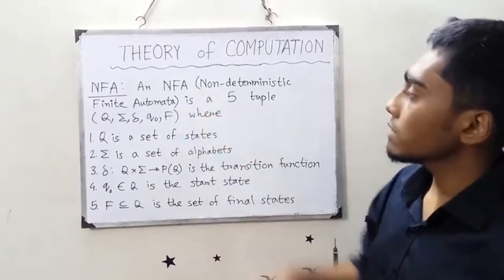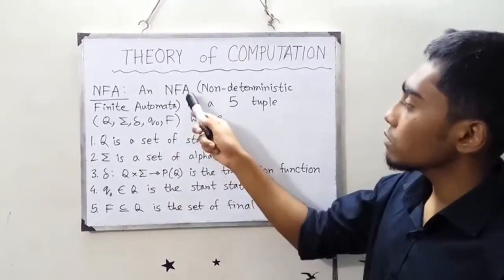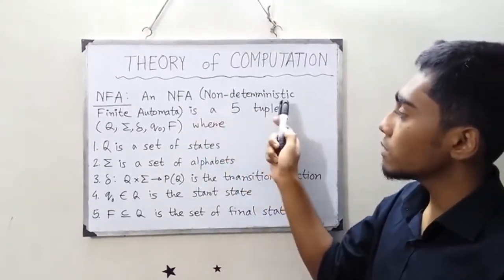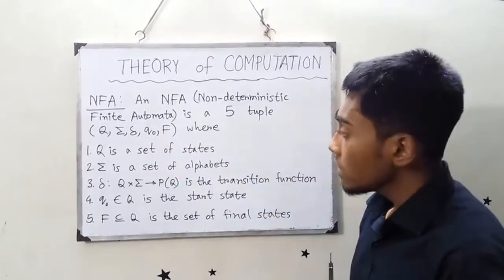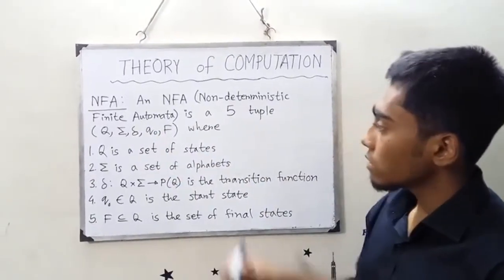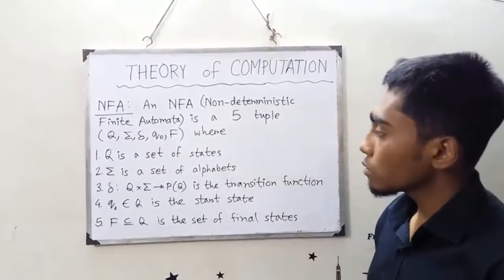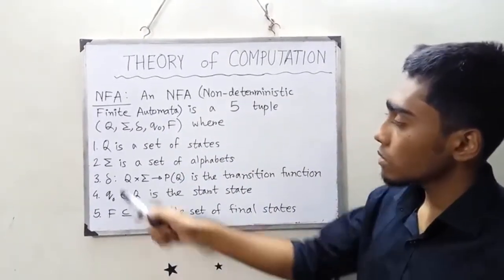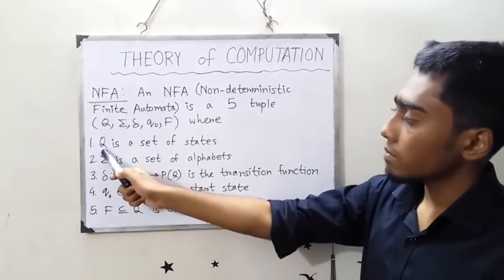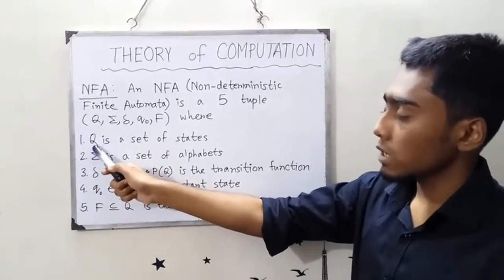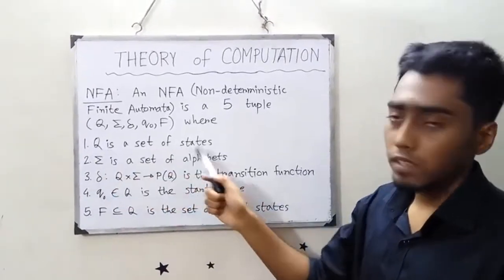First of all, NFA is a Non-Deterministic Finite Automaton. Q is a set of states.